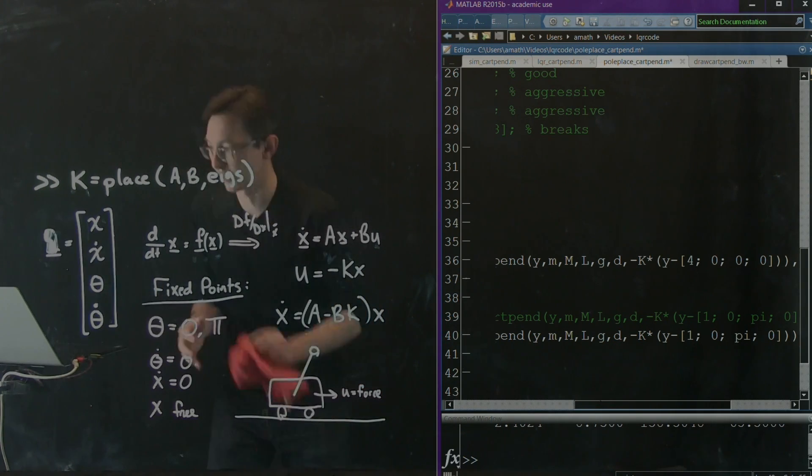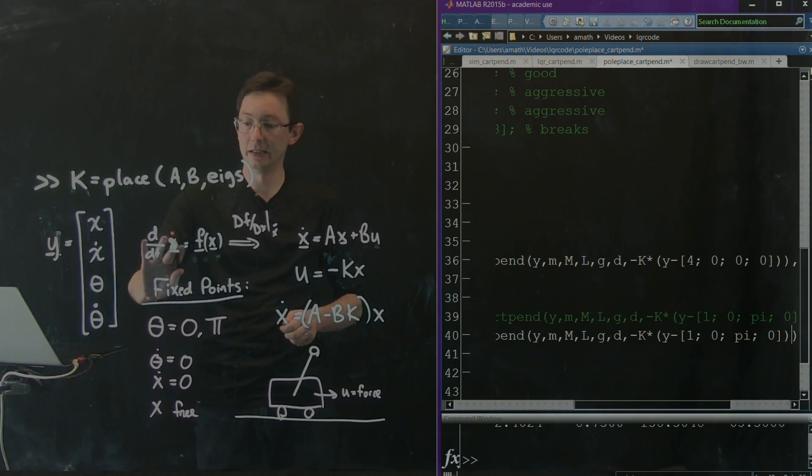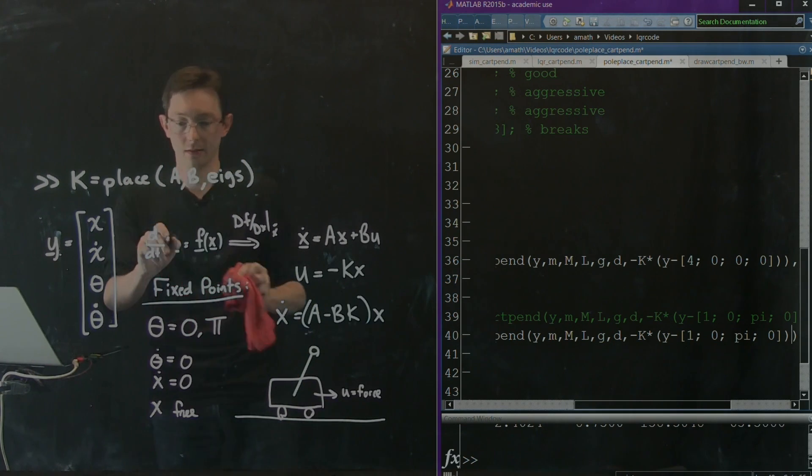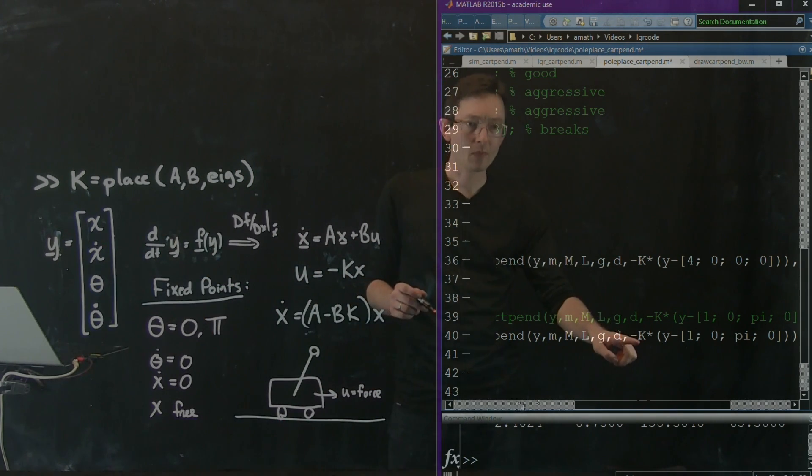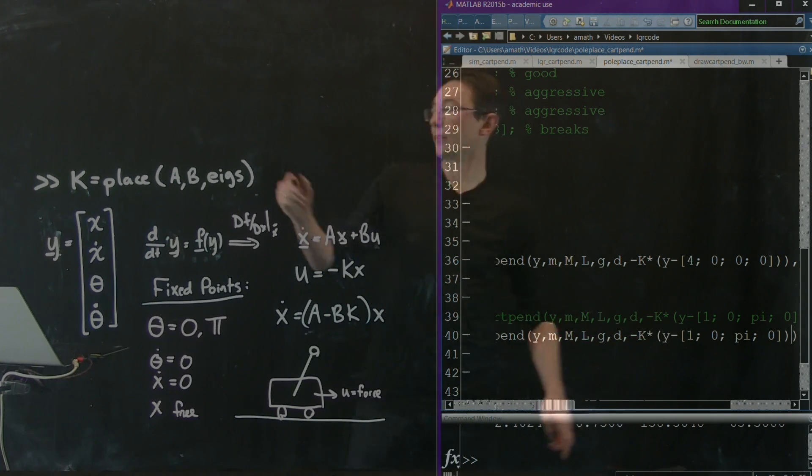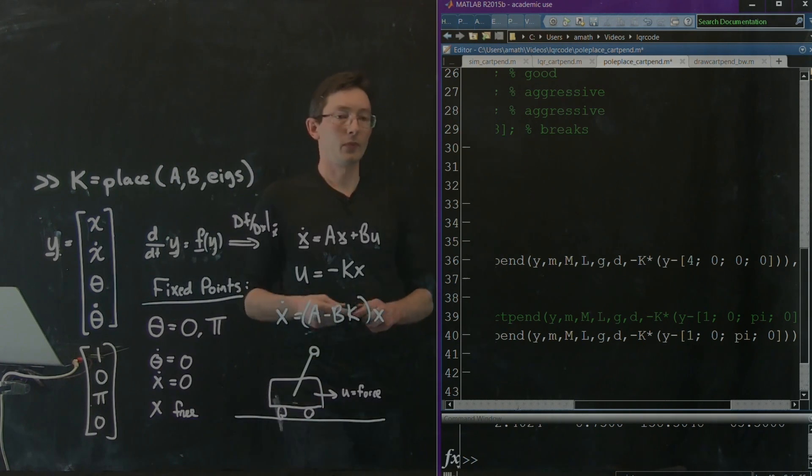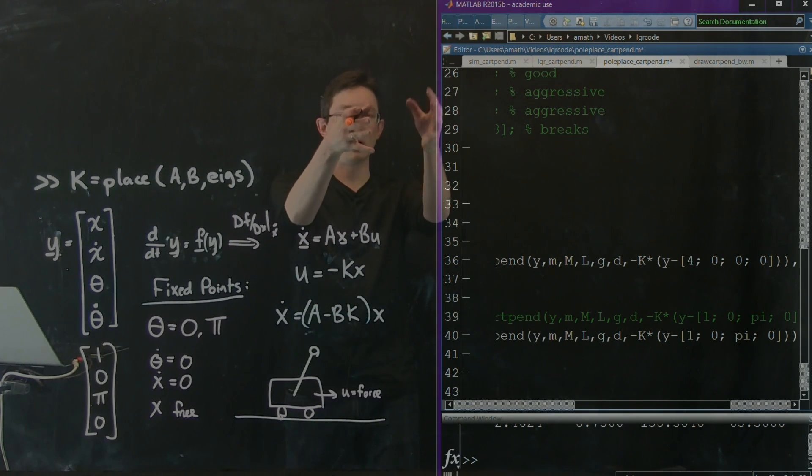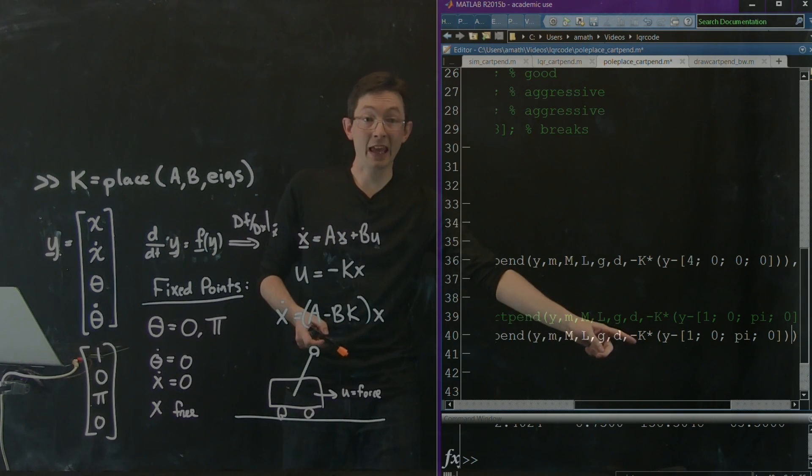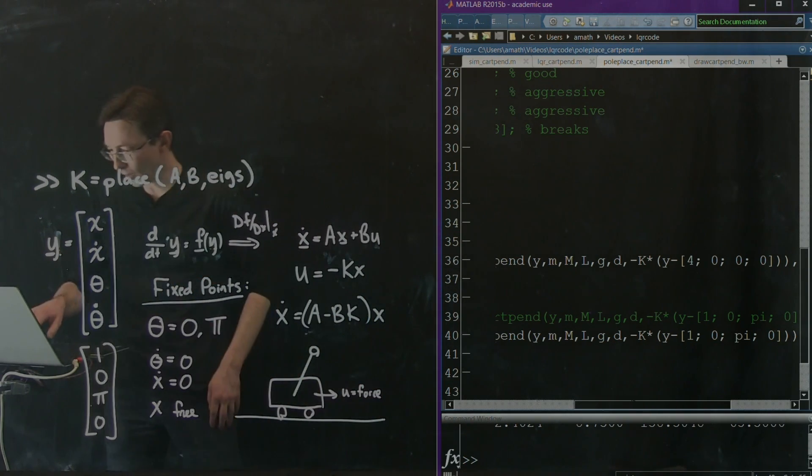And so basically what I want is y, my state. So I'm calling this a vector y and d dt of this is y of f of y and all of these become y's, whatever, in MATLAB. What I want is for my state, I want this to approach a reference value of 1, 0, pi, 0. Okay. And so what that means is I want this thing to walk over to x equals 1 and keep the pendulum in the vertical position. And with that k gain matrix, I should be able to do this because I've stabilized my system. Okay. So let's try this out.